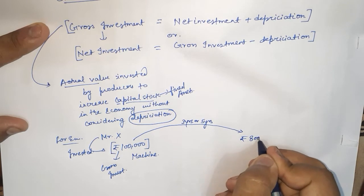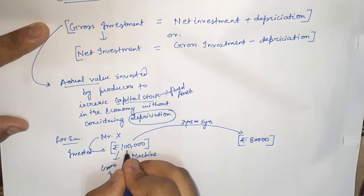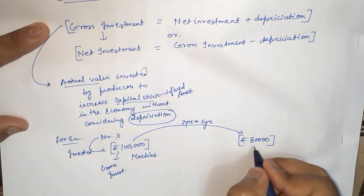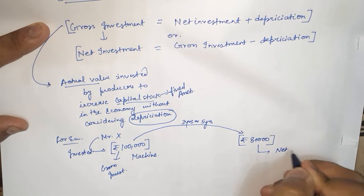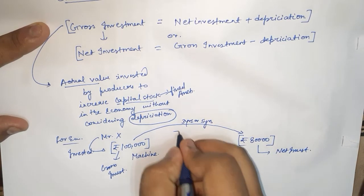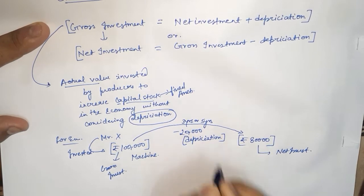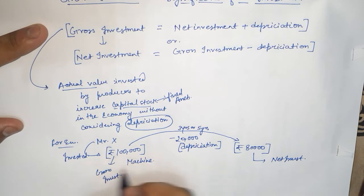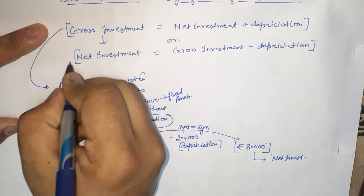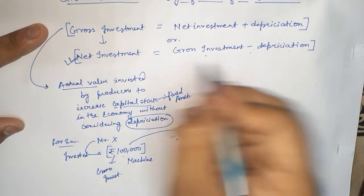Let us take the example that the value of the machine after 3 to 5 years becomes 80,000 rupees. That means the 1 lakh rupees value was the gross investment, and we are not taking into consideration the depreciable value when it is just purchased by the producer Mr. X. The 80,000 rupees is considered as net investment, meaning we are taking into consideration the deduction of 20,000 rupees as depreciation. So the basic rule is: to calculate net investment, you always deduct depreciation from gross investment — gross investment minus depreciation gives you net investment.